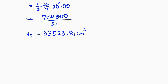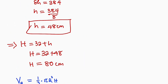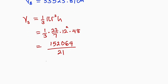Now we find the volume of the smaller cone: (1/3) × π × r² × h, with π = 22/7, r = 12, h = 48. So we have 22 × 144 × 48 = 152,064, divided by 21, giving 7,241.14 cm³. This is the volume of the smaller cone.